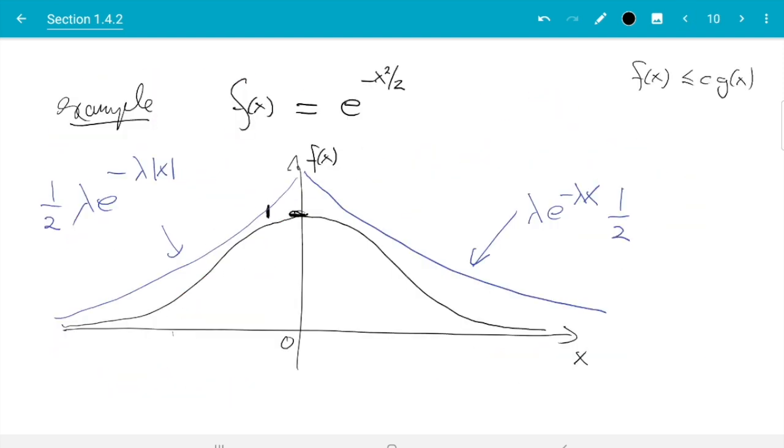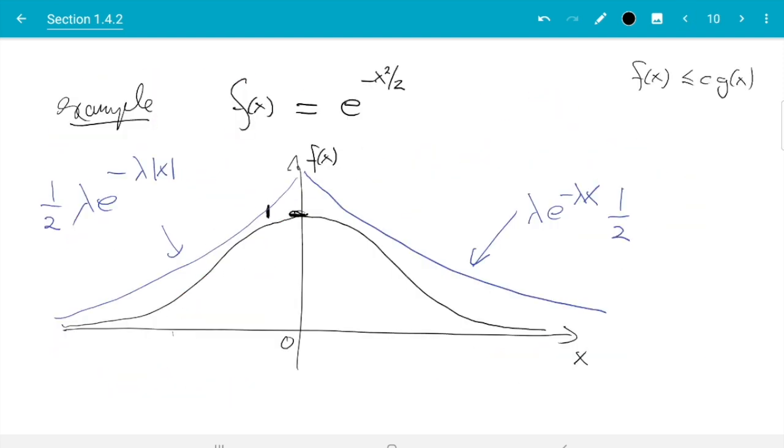So we discuss this plot here, and here we see what we then also found when doing it theoretically. There is some constraint here: we need to be sure that the blue curve is above the black curve, and if we choose c optimally, cg will touch f here. But there is a second constraint which we haven't really discussed.